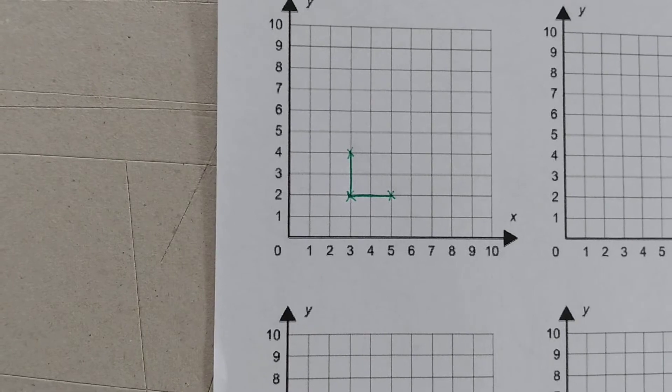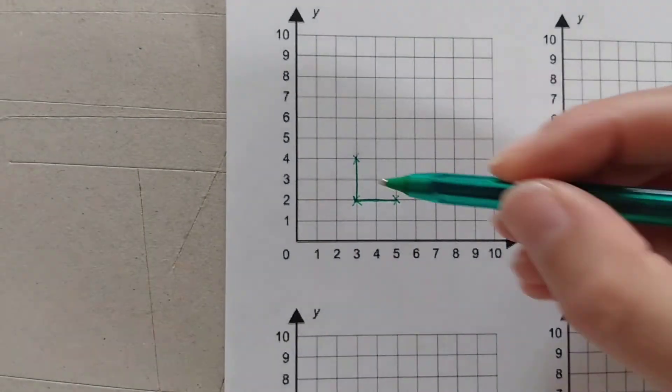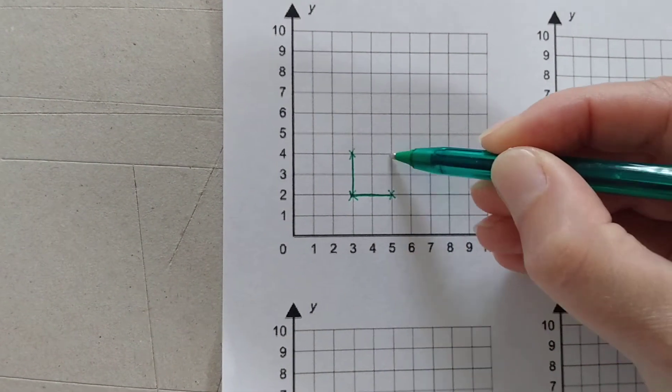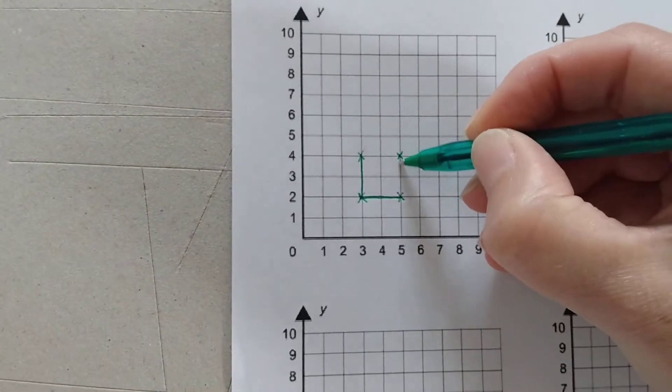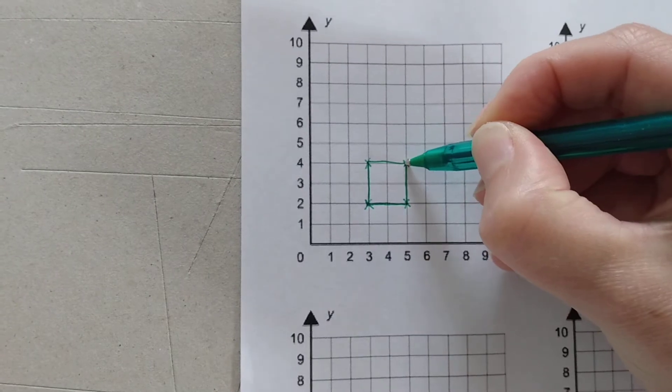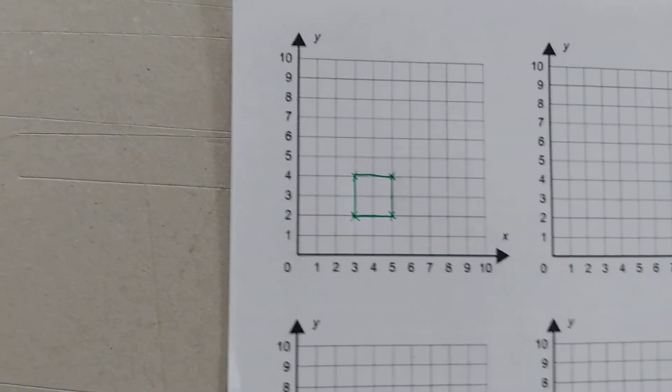Remember all of a square's sides are equal length? So I've got a 2, a 2, I need a 2 and a 2 and I can finish off the lines to join that square. So I've plotted coordinates to make a square.